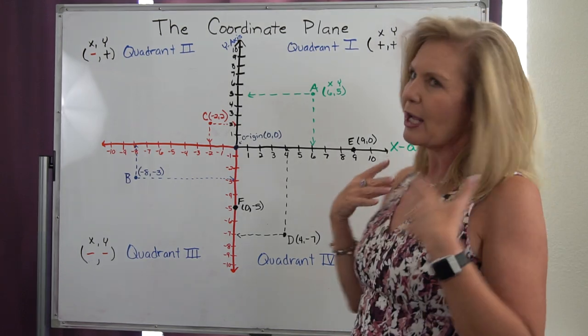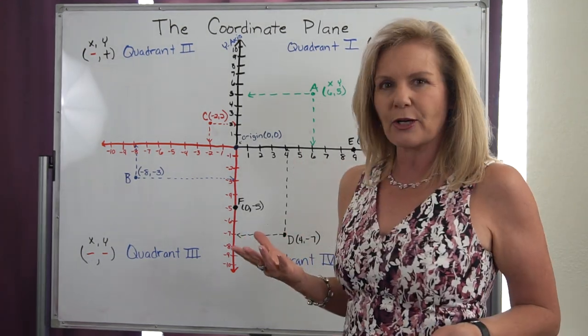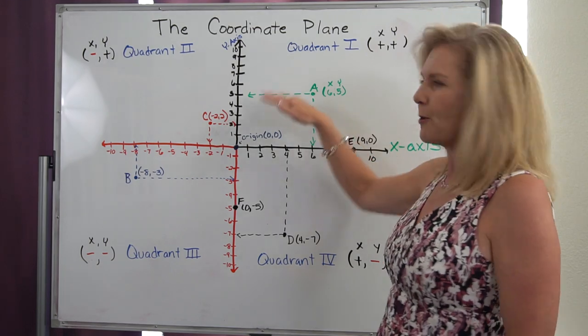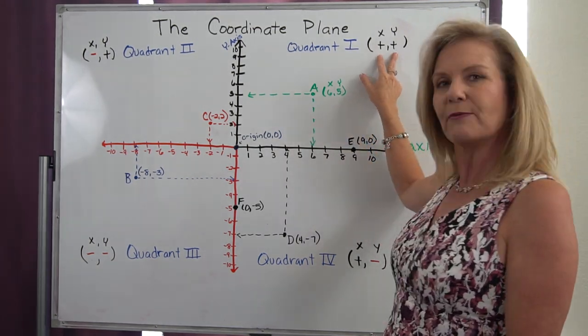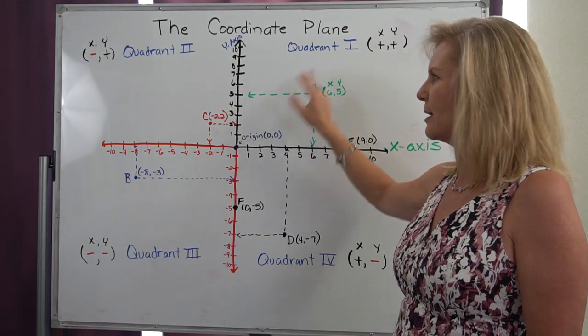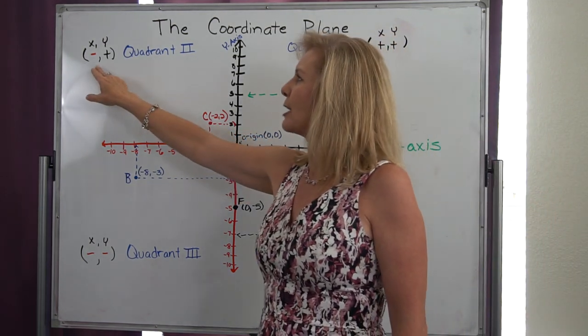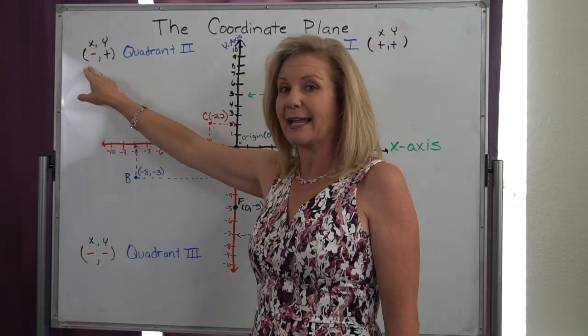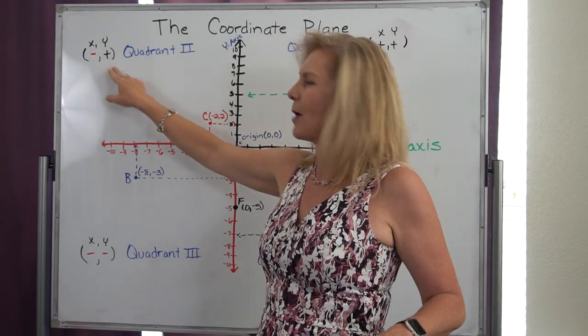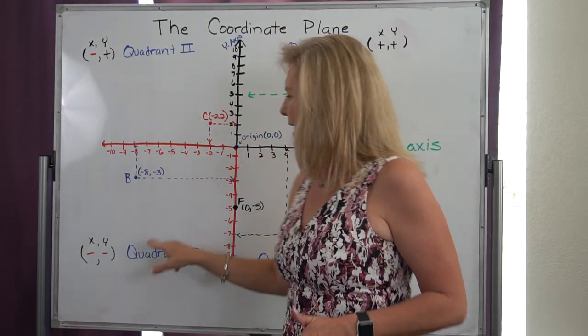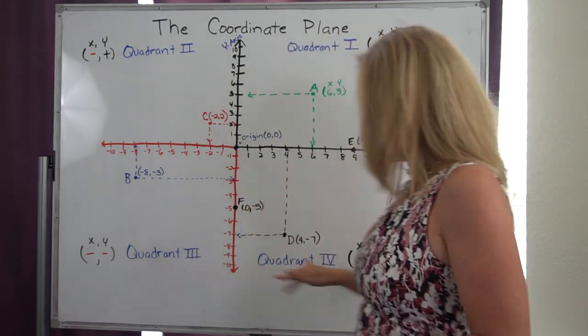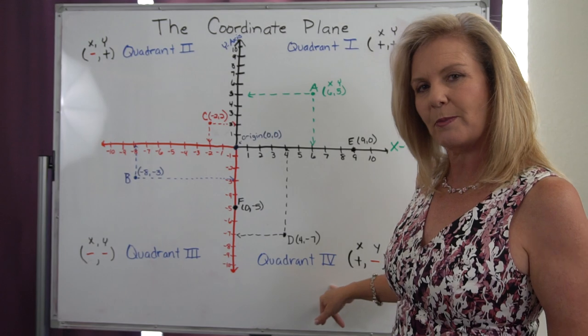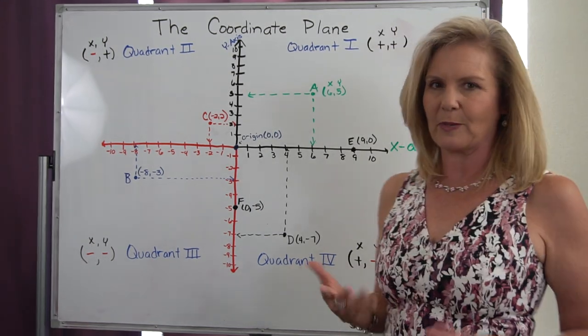We'll see some patterns that are coming out in our quadrants. Notice that no matter what, our x and y values are always positive when we're in quadrant 1. In quadrant 2, our x is always negative while our y is always positive. In quadrant 3, both our x and y will always be negative. In quadrant 4, our x will be positive and our y will be negative.